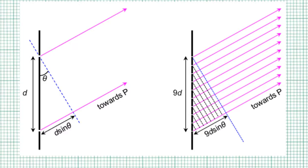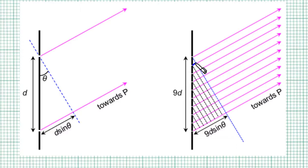Just like in the double slit, if the screen is placed far away enough, all the rays are going to be practically parallel to one another. And just like in the double slit, this length corresponds to the path difference. So between slit 1 and slit 2, the path difference is D sin θ. And the path difference between slit 2 and slit 3 is also D sin θ. This comes about because the slits are regularly spaced out.